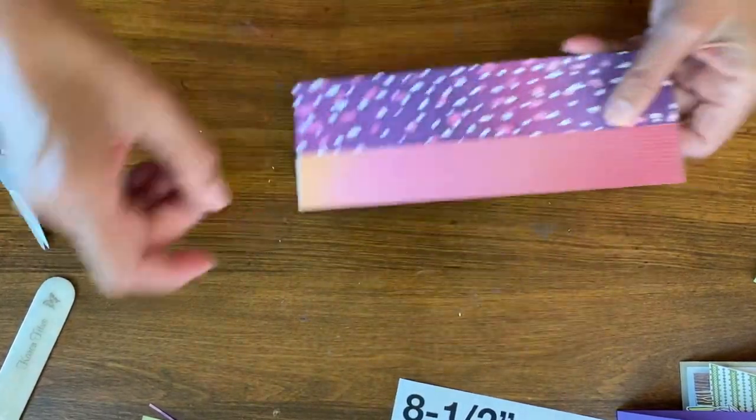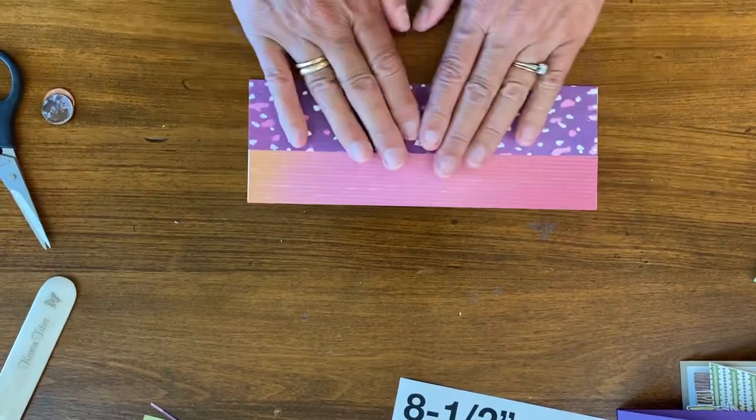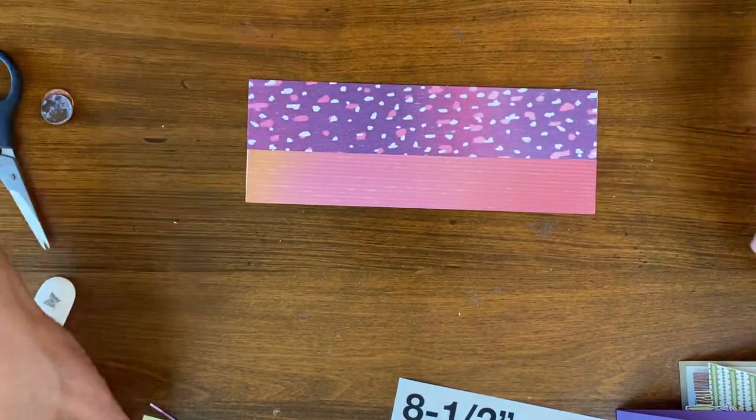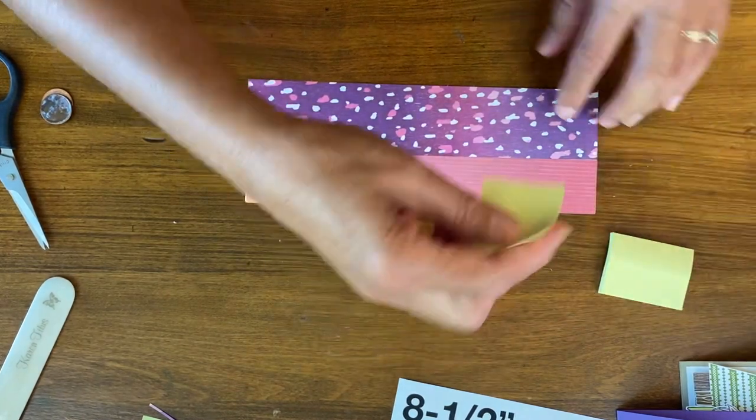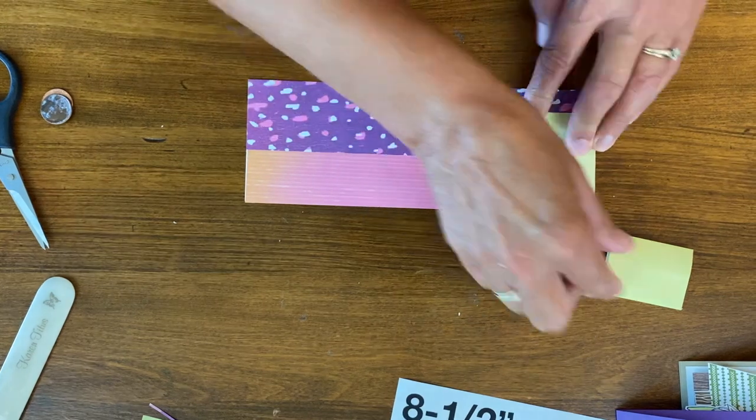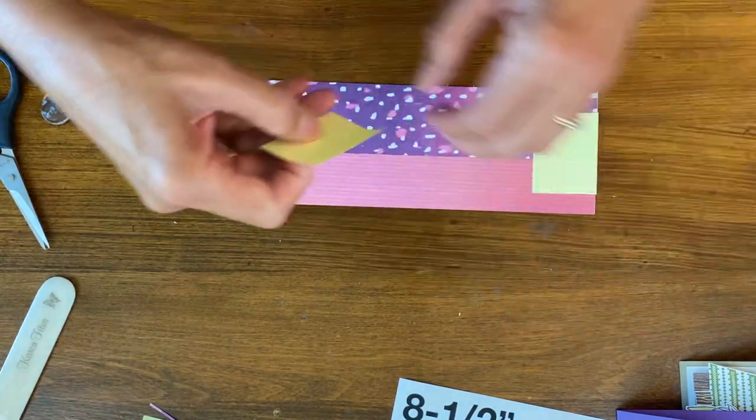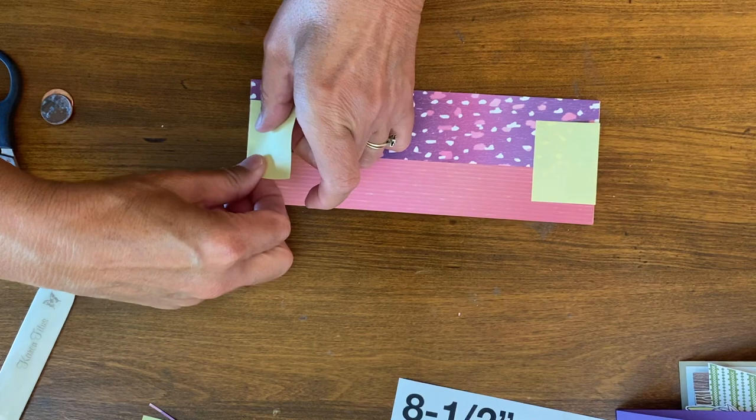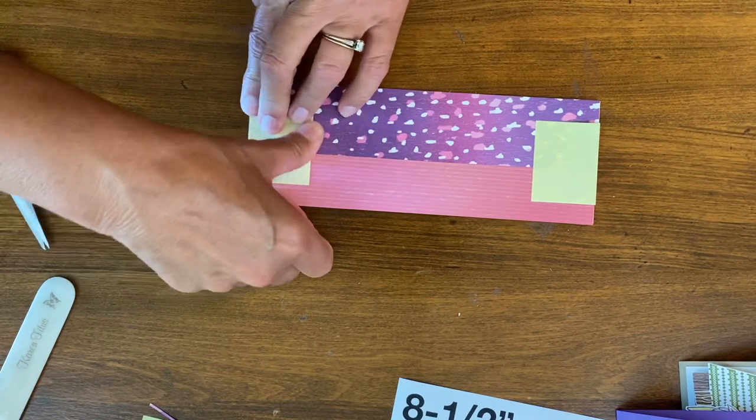So now this is going to be my base and I'm going to take two post-it notes of this size. And again, I could use anything, but this is going to be my markers for how far I want the runner to go.